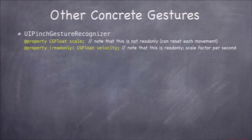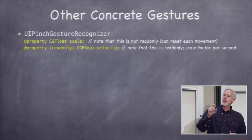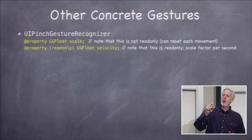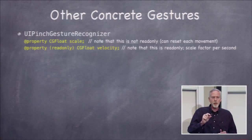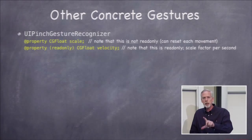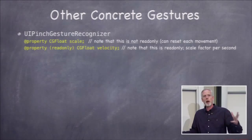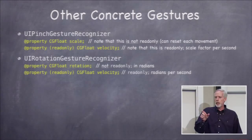Let's look at some of the other concrete recognizers. Pinch doesn't have translation — it has scale. When the pinch first starts, the scale is 1.0, and as you spread out it goes 1.1, 1.2, 1.5, 2.0, then back down as you come in. The velocity is how fast, in scale factor change per second, that's happening — so you can tell if the user is pinching really quickly trying to zoom out fast. The rotation gesture recognizer is also a two-finger thing, like a pinch except you turn your fingers.